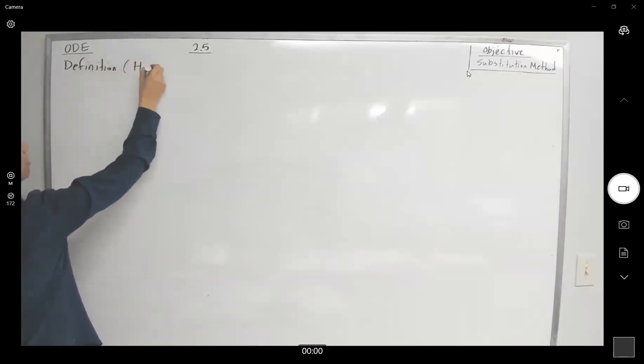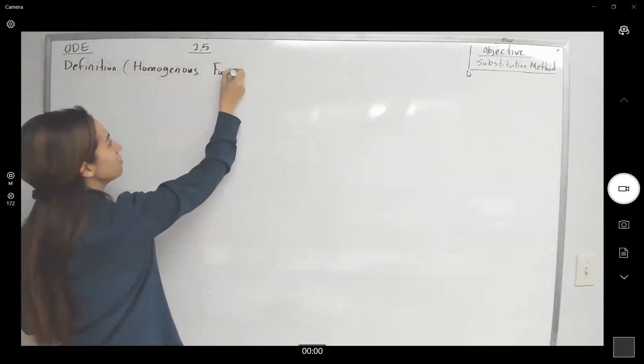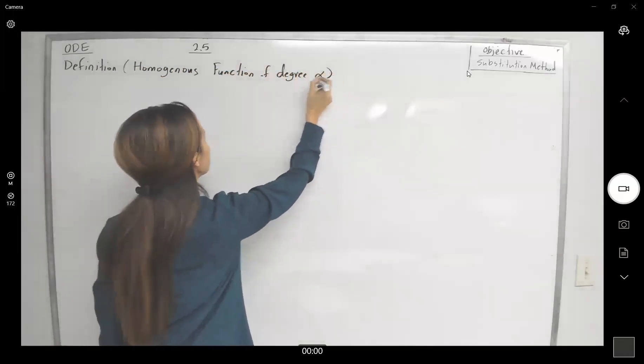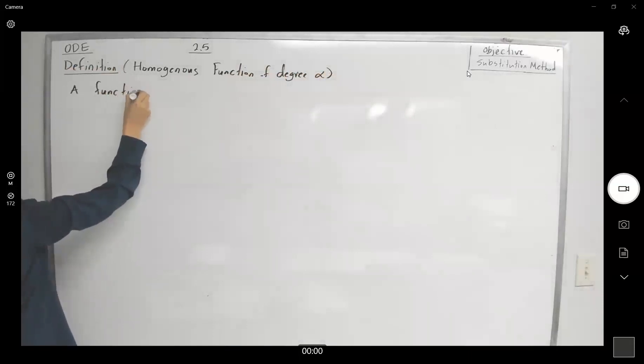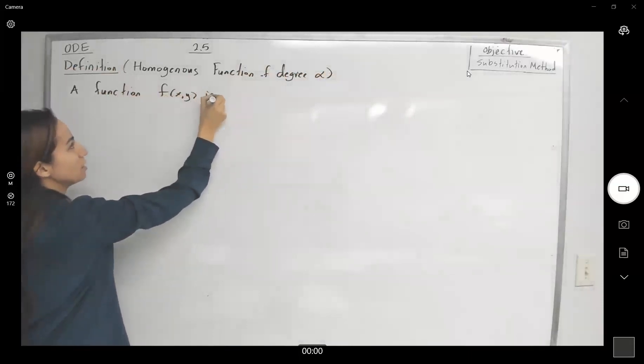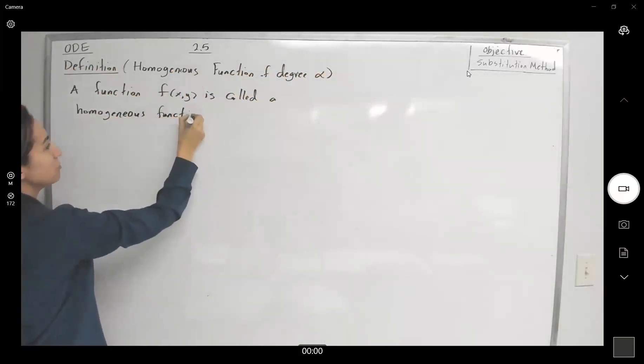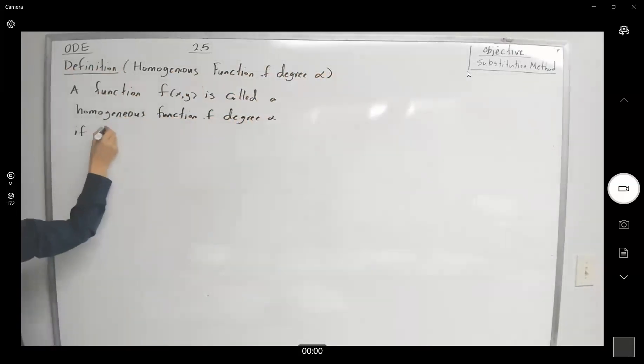Definition of homogeneous function of degree alpha: a function in x and y, f(x,y), is called a homogeneous function of degree alpha if it satisfies